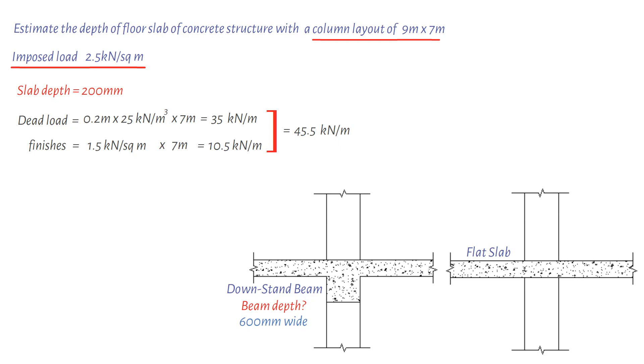Therefore, ultimate uniformly distributed load: 1.25 times 45.5 plus 1.5 times 17.5. This results in a value of 83.125 kilonewtons per meter.